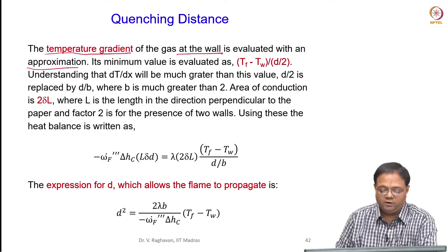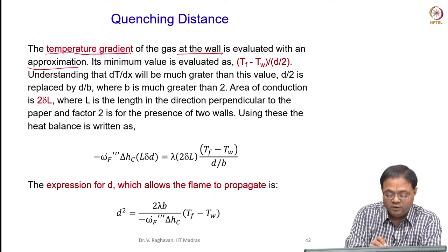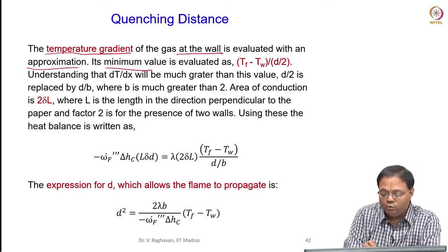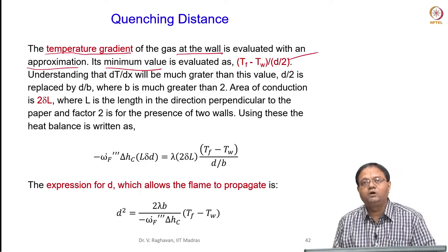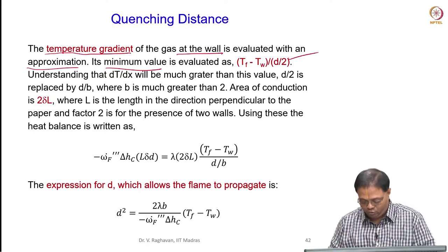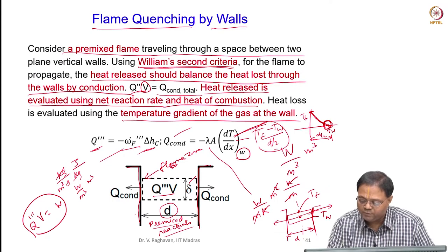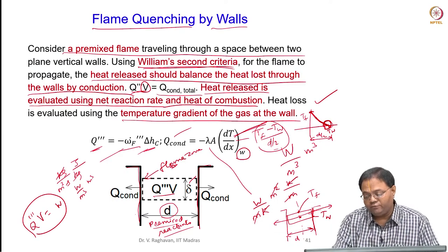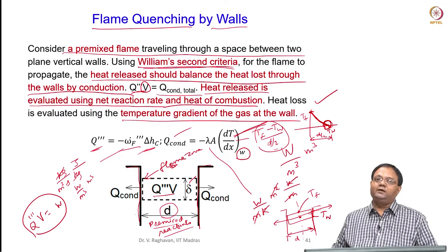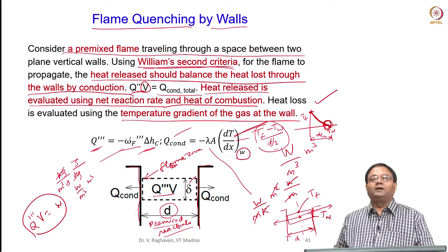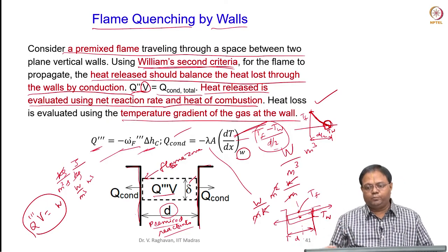We can calculate it approximately because numerically we are not solving this. The minimum value is evaluated as (Tf minus Tw) divided by (d/2). As I have explained in the previous slide, this will be the temperature profile, and (Tf minus Tw)/(d/2) will be the gradient, which is the minimum value. But since it is a non-linear variation, the gradient at the wall is expected to be different — it will be higher.